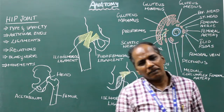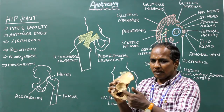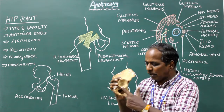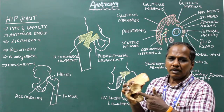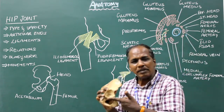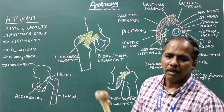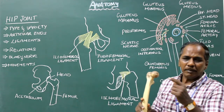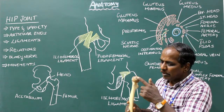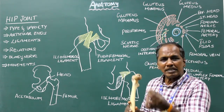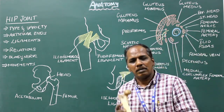Transverse ligament of the acetabulum bridges between the two ends of the lunate surface of the acetabulum. There is an acetabular notch, and this notch is converted into a foramen by the transverse acetabular ligament. Round ligament of the head of femur is triangular in shape. Its apex is attached to the fovea capitis present in the head of the femur. Distally, it is attached to the transverse ligament of the acetabular notch.